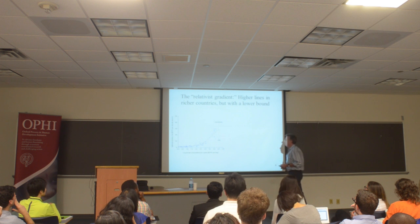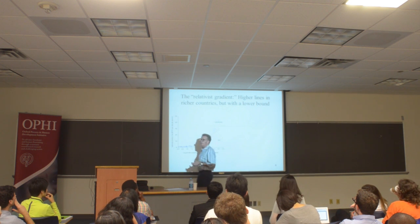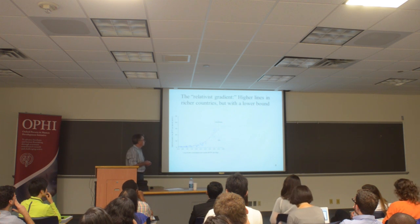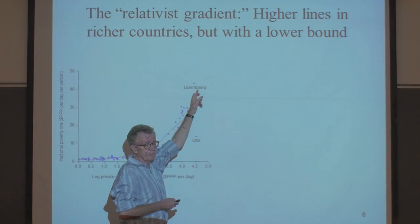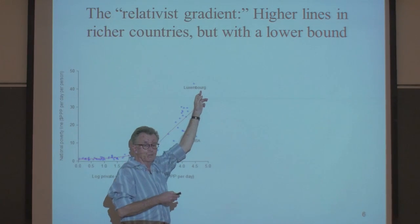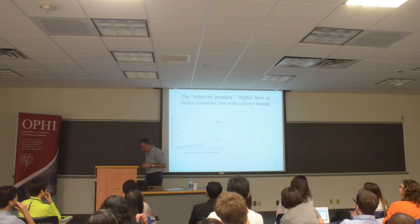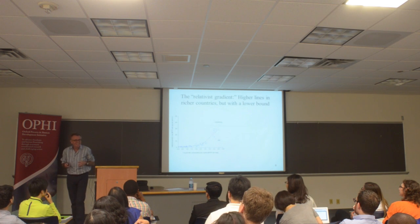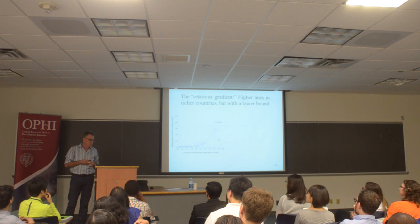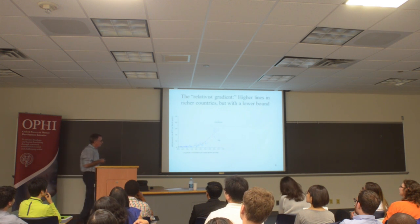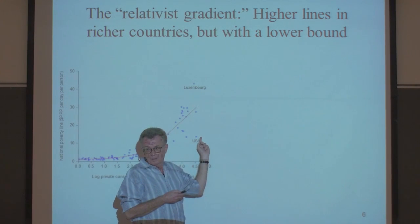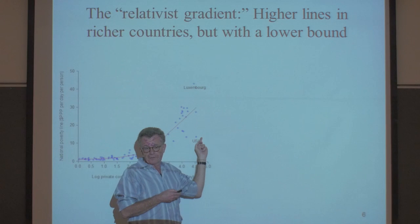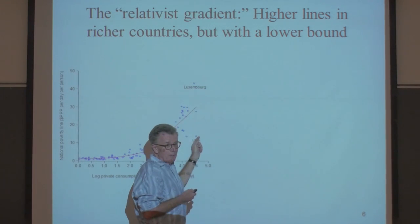At the top we have Luxembourg — the richest country in the world — with a poverty line of around $43 a day. Not much poorer than Luxembourg is the United States, where the poverty line is $13 a day for a family of four in 2005. That's a pretty big difference. I'm not saying anything about it — I'm just observing it.